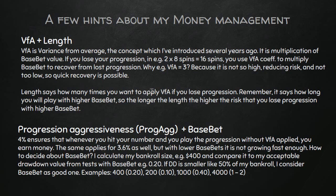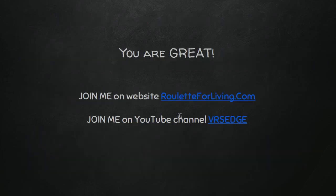For progression aggressiveness, I use something like 4%, which always guarantees I'm in profit. If it's the first progression with no lost progressions before, I know that whenever I hit within my first 20 spins using this 4% progression aggressiveness — gradually increasing the base bet — I'm always in profit. You can play with this a lot: try a more aggressive setup like 10% and see how fast it goes up, or use 3.6%, which is the minimum to always be in profit. These are hints about money management that can help you be even more successful.